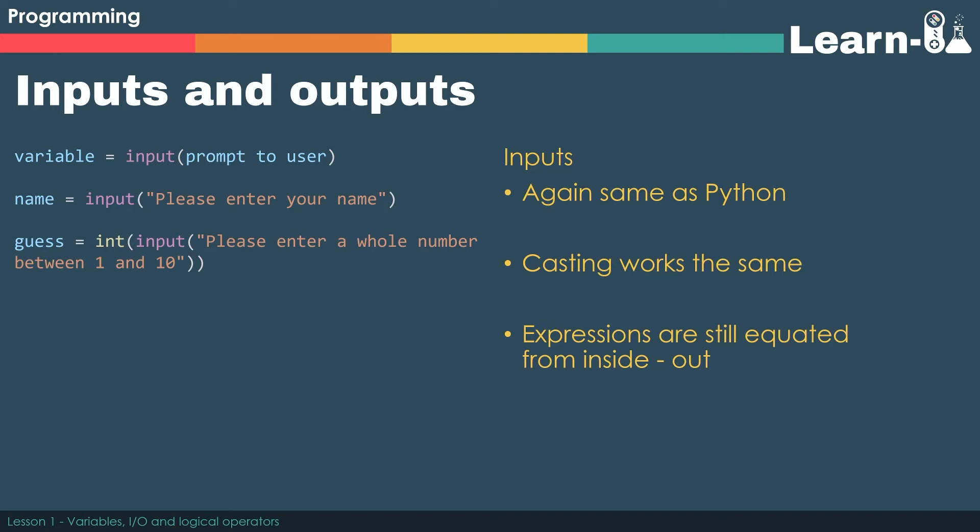If we take a look at guess equals int input please enter a whole number between 1 and 10, on the left hand side of the equal sign we have a variable guess. On the right hand side is an expression. Remember, an expression is always evaluated to just one value before being assigned to the variable. So take x equals 5 plus 3. 5 plus 3 is an expression made from values and operators. This would be evaluated first, and then 8 would be assigned to x, and x would become an integer.